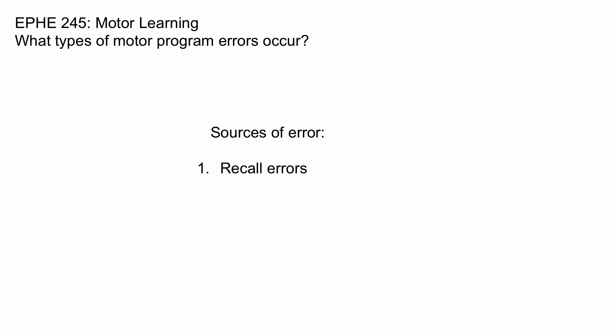The first of these are what we call recall errors. This is simply when you reach into memory and access the motor program, you just don't recall it correctly. Think of all the hundreds of thousands if not millions of neurons involved in executing a motor skill — sometimes you just select the wrong ones from memory. These are recall errors.